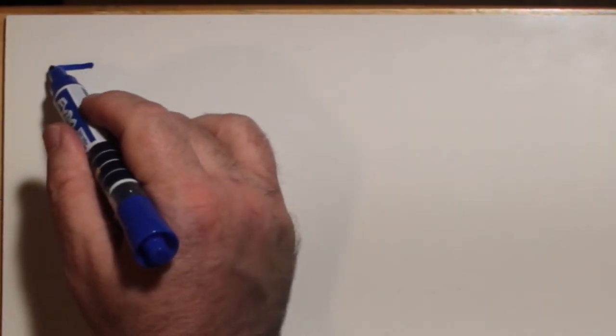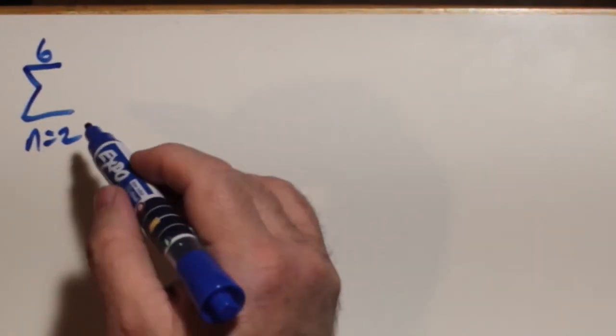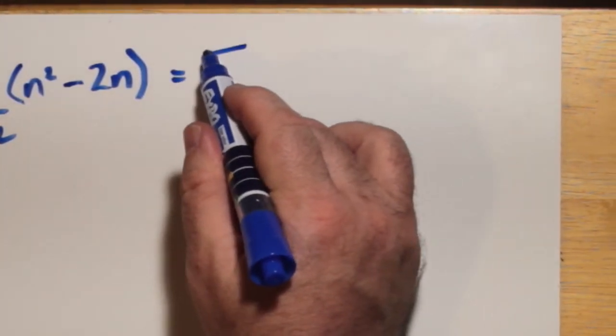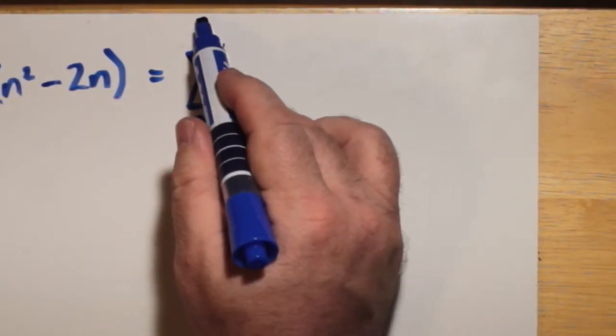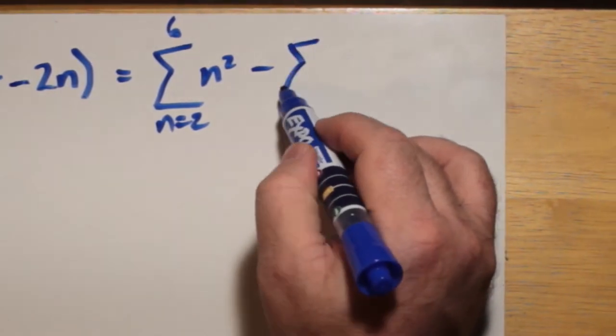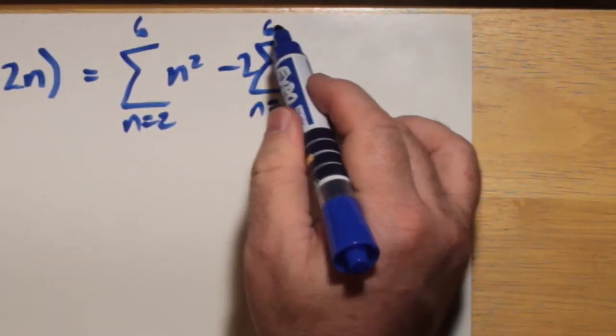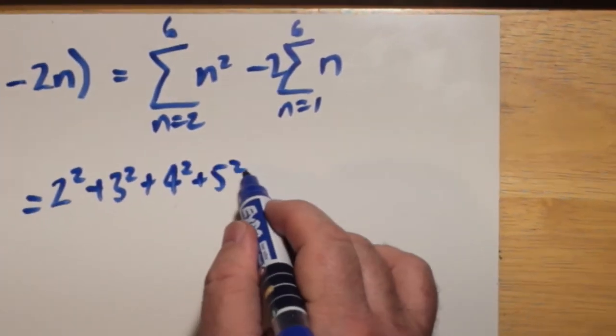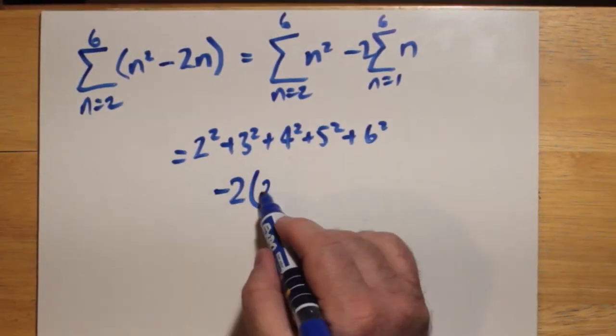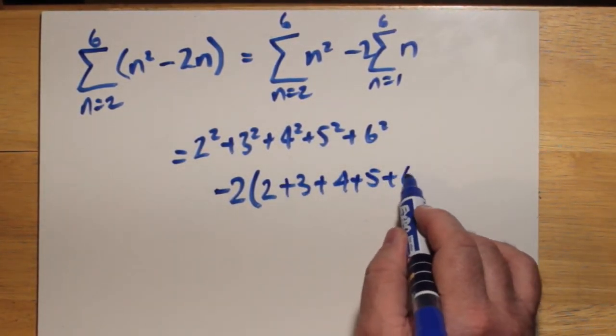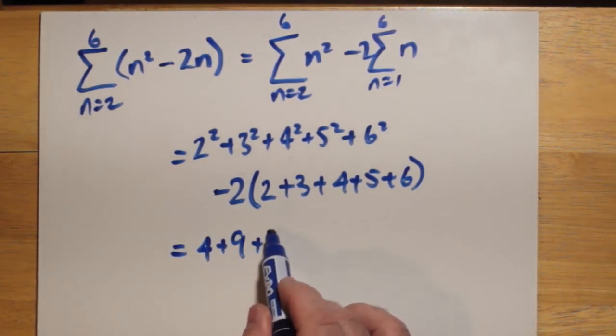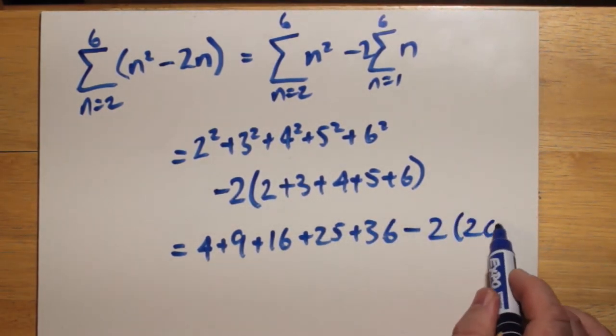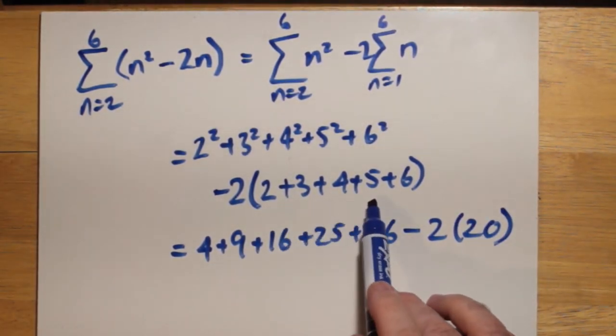Here, we have a binomial n squared minus 2n and once again, we can have one sum for n squared, another sum for 2n and we can actually take the two outside. Both sums go from 1 to 6 and then by substitution we end up with 4 plus 9 plus 16 plus 25 plus 36 minus 40 and that ends up being 15.